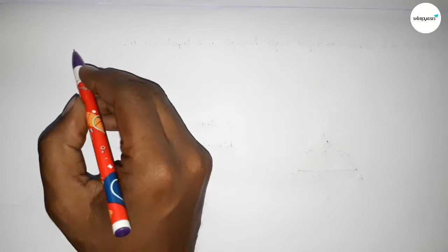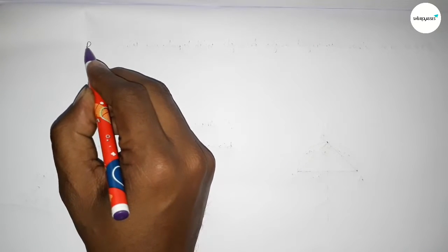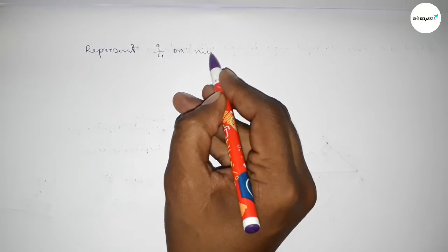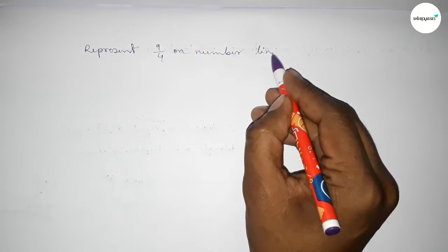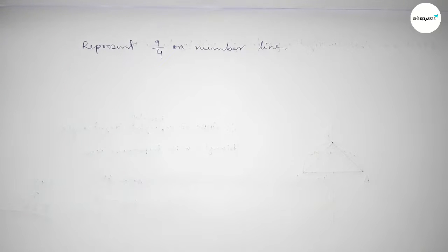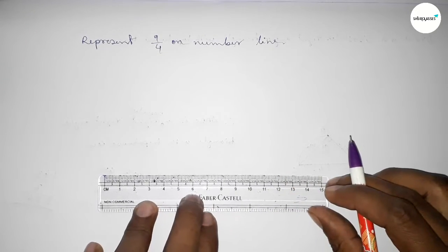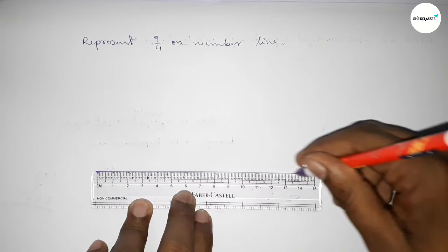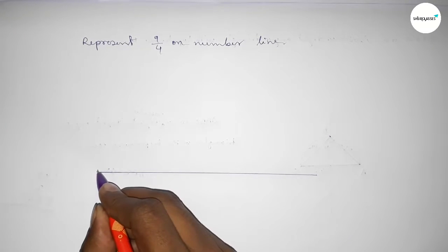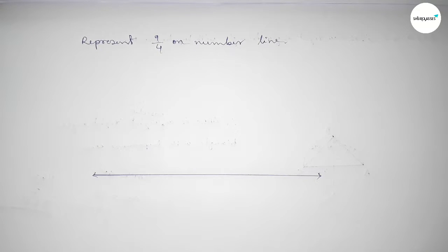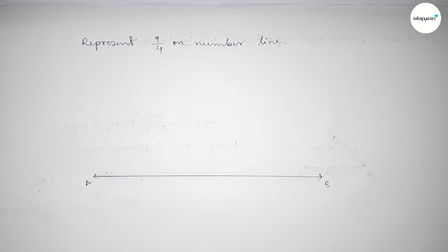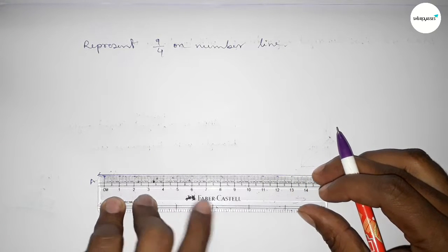Hi everyone, welcome to Siz Classes. Today in this video we have to represent 9 over 4 on a number line. So let's start the video. First of all, we have to draw here the number line. So first drawing here a line, taking on both sides an arrow mark — this is a number line.